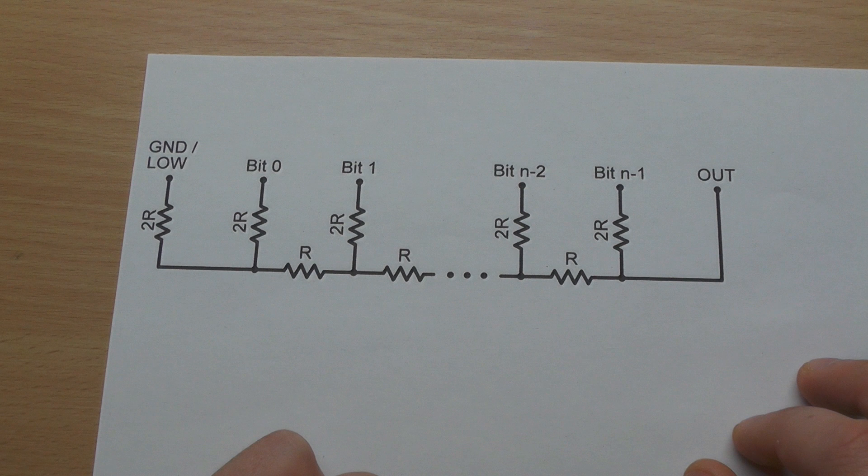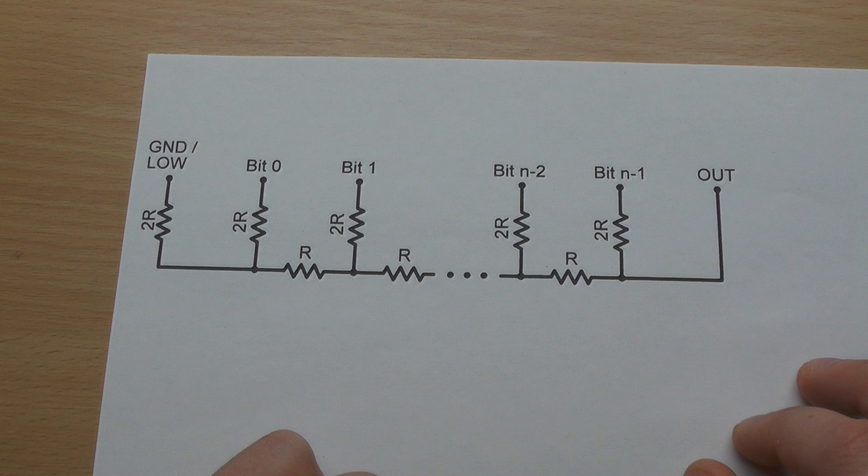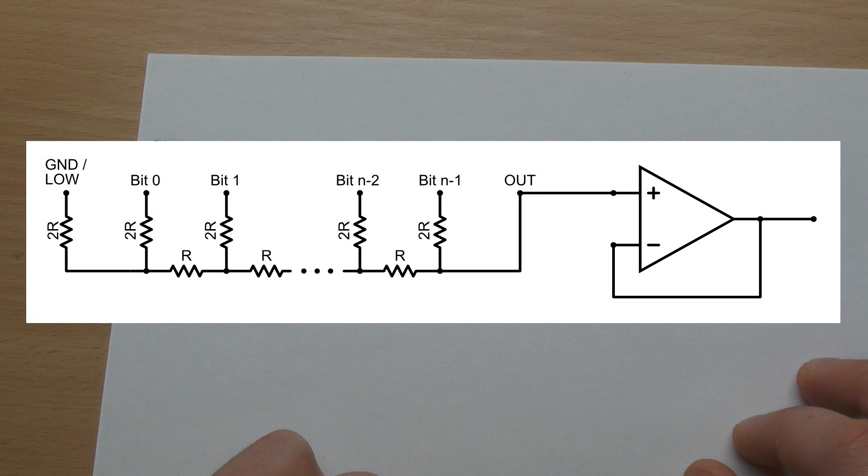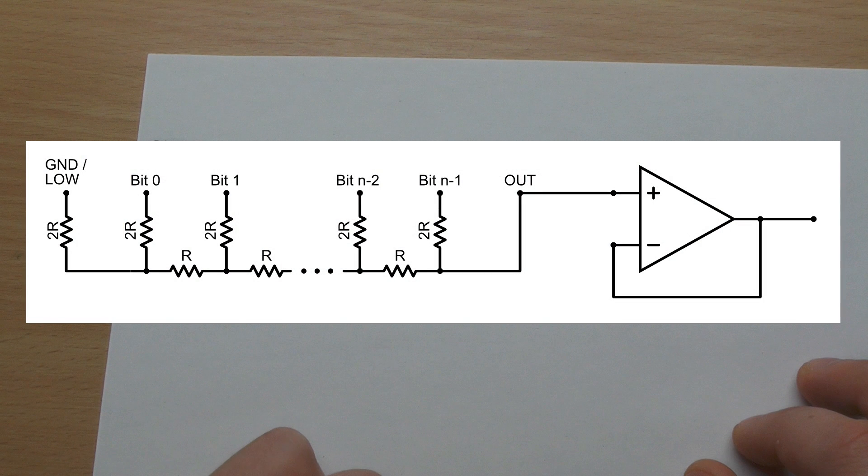If you want to limit your power consumption, you rather take higher values for R and connect it to an operational amplifier, wired as a voltage follower.